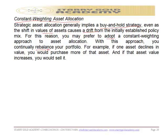For example, if one asset declines in value, you purchase more of that asset. If that asset increases, you sell it. That is a constant rebalancing — you will not let a particular asset be more than what you expect it to be. There is no hard and fast rule for timing portfolio rebalancing under strategic or constant weighting asset allocation. But a common rule of thumb is that the portfolio should be rebalanced to its original mix when any given asset class moves more than 5% from the original value. Either you sell the excess or you buy more.